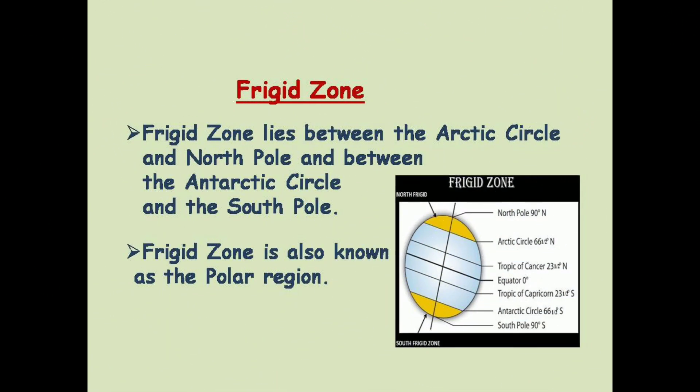Now we will discuss about the frigid zone. The frigid zone lies between the Arctic Circle and the North Pole, and between the Antarctic Circle and the South Pole. This zone is also known as the polar region. Since it receives the extreme slanting rays of the sun, the temperature is extremely low throughout the year. This is the reason why the polar regions are generally covered with ice throughout the year.